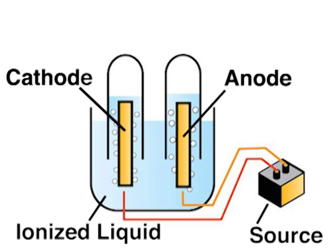Remember that electric charges are attracted to their opposites. As a result, negative ions are attracted to the positively charged anode. There they undergo chemical reactions that cause them to lose electrons. Likewise, positively charged ions are attracted to the negatively charged cathode, where they undergo chemical reactions to gain electrons.